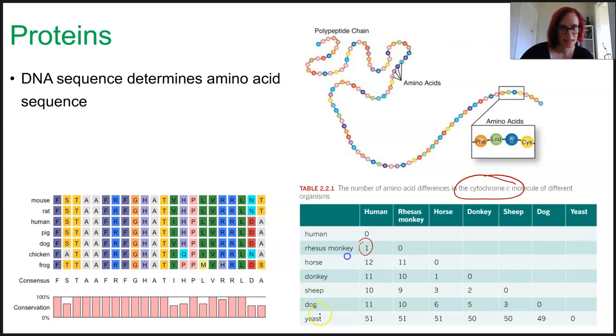If you have a look at humans and rhesus monkeys, really close, these ones you know 10 to 12 approximately with the horse, donkey, sheep, dog, but the yeast, there's 50 differences in our amino acid sequence in that one gene.